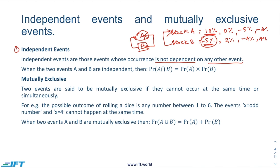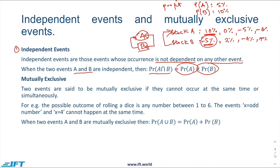When the occurrence of one event is not impacting the occurrence of another event, and if we want to calculate the probability of two independent events A and B happening together, we simply multiply their probabilities. For example, if the probability of A making a profit is 5% and the probability of B is 10%, then their combined probability or intersection would be 10% multiplied by 5%.